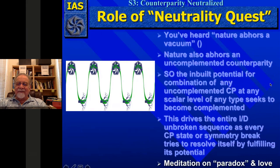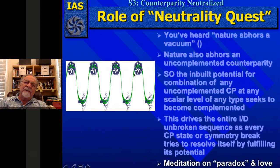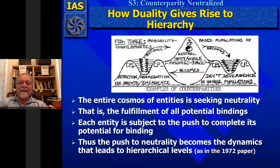Systems processes theory loves paradox because paradoxes are within a level, and in order to solve a paradox you should go to other levels. The concept of love is that combinations are absolutely necessary to meet neutrality — it's sex across the cosmos, I guess you could say. The entire cosmos of entities is seeking neutrality, the fulfillment of all potential bindings, and each is subject to the push to complete its potential for binding. Thus, the push to neutrality becomes the metacrescence — the dynamics that leads to many hierarchical levels.